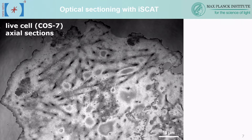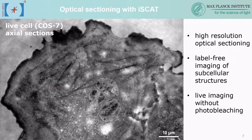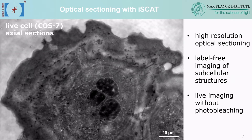Because it's a confocal technique, the main advantage is optical sectioning. In this live COS7 cell we recorded axial sections, and you can see prominent actin bundles ending in focal adhesions and the membrane edge. Moving to the next section, recorded a little bit higher, the nucleus appears along with other features like the endoplasmic reticulum. The big advantage here is label-free imaging of subcellular structures — we have a means to look inside the cell, detect structures in live imaging without the limit of photobleaching.